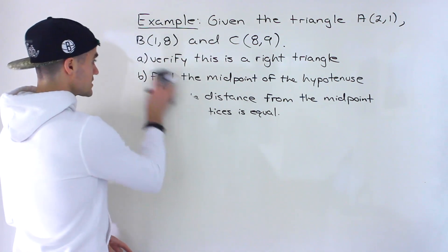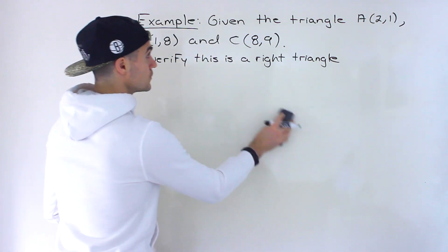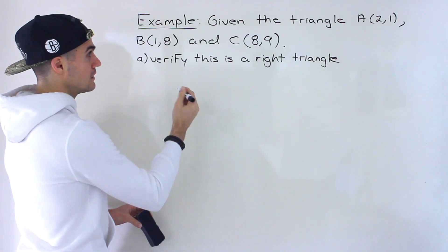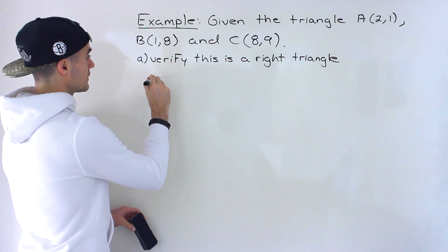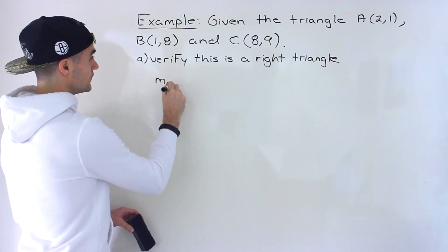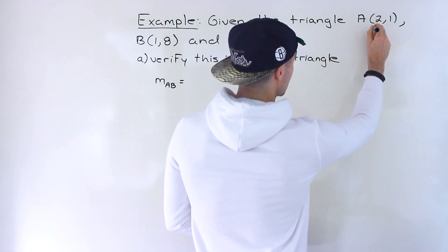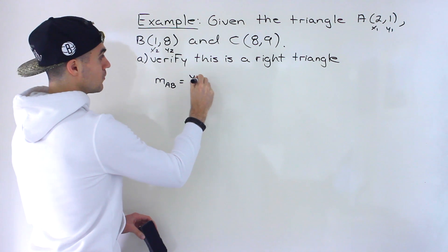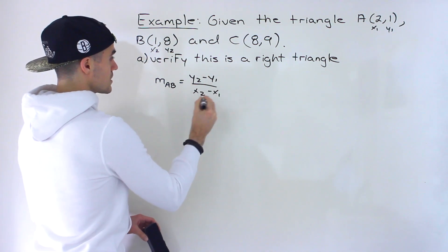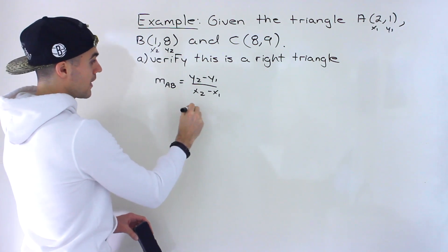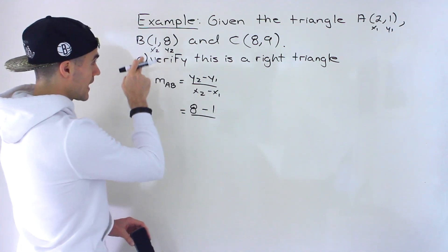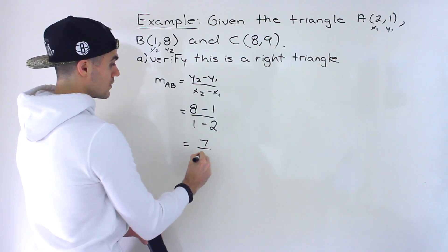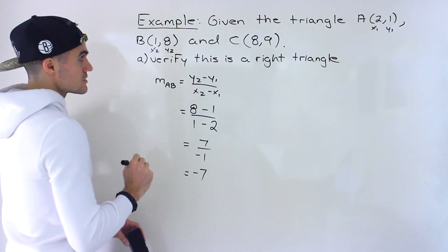Let's find the slopes of all three sides. Starting with the slope of AB: label A as (x1, y1) = (2,1) and B as (x2, y2) = (1,8). Using the slope formula (y2 - y1)/(x2 - x1), we get (8 - 1)/(1 - 2) = 7/(-1) = -7. So the slope of AB is -7.